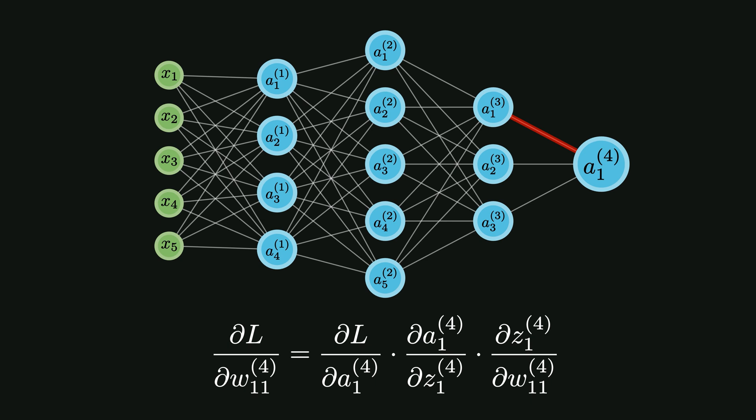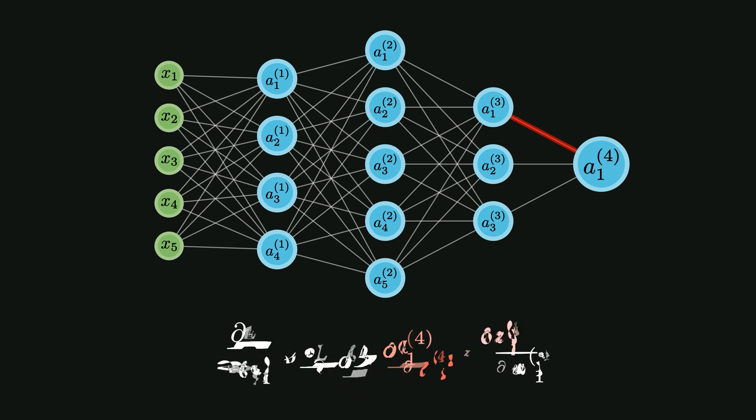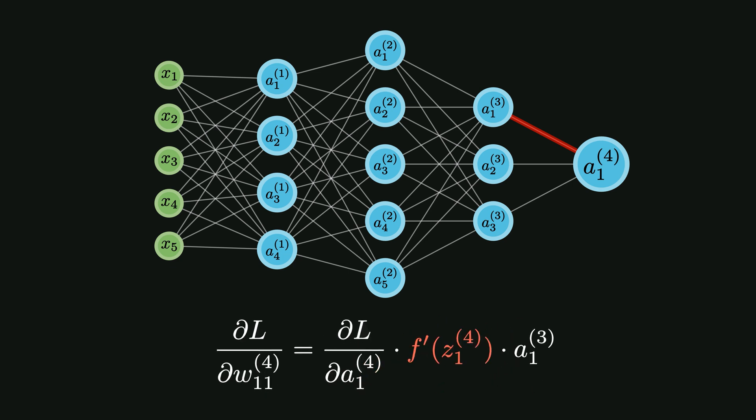In this chain of derivatives, the main culprit that can cause these problems is this term: the derivative of the activation function. If we simplify this, it looks like this, where f is the activation function that we use.